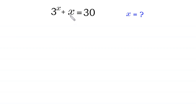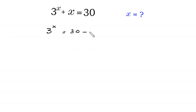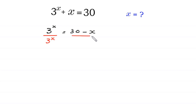First of all, we move this plus x to the right side. So 3 to the power x is equal to 30, and this plus x becomes negative x at the right side.